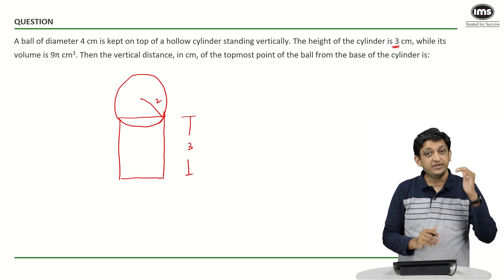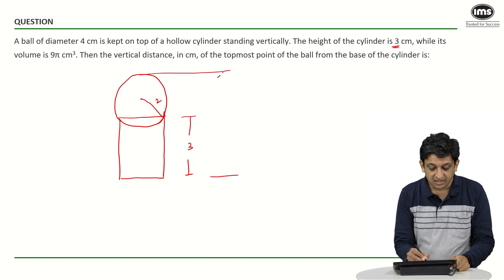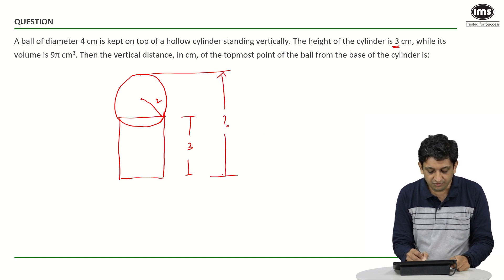We want to find the vertical distance of the topmost point of the ball. So this vertical distance from the base of the cylinder. This is basically something that we have to figure out.